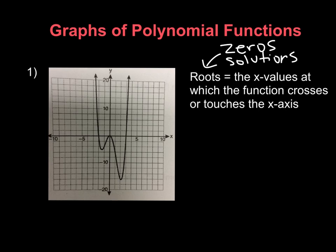If we look at our graph, we can see the function crosses the x-axis at x equals negative 2, so that's going to be one of our roots. It touches the x-axis at x equals 0, so that's going to be another root. And it also crosses through the x-axis at x equals positive 3, so that's going to be another root.